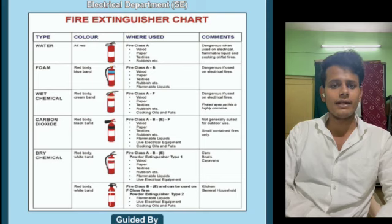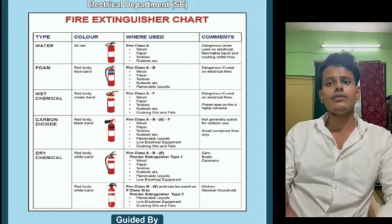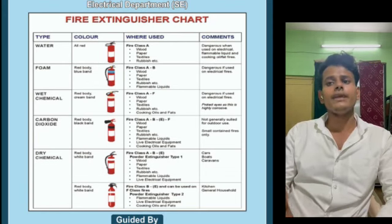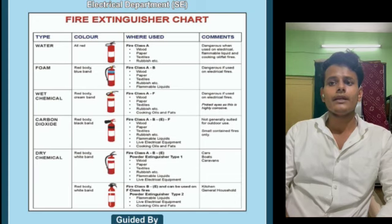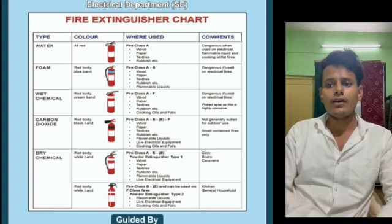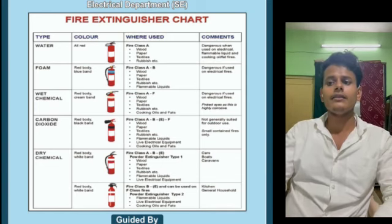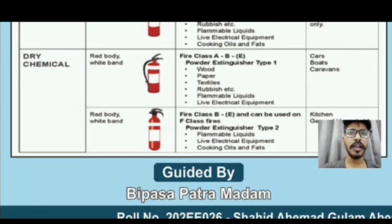Fires are classified into four classes: A, B, C, and F. Class A fires generally consist of paper, wood, clothes, and some plastics. Class B fires consist of alcohol, ether, oil, gasoline, and grease.